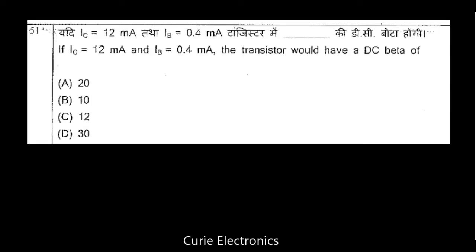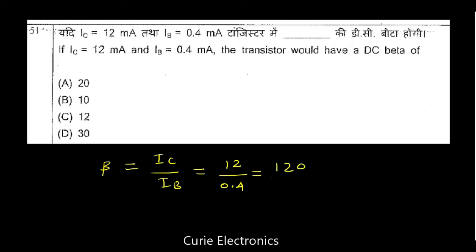Question number 51: If IC equals 12 milliamps and IB equals 0.4 milliamps, the transistor DC beta equals IC divided by IB, which is 12 divided by 0.4. Multiplying numerator and denominator by 10 gives 120 divided by 4, which equals 30. So beta equals 30.